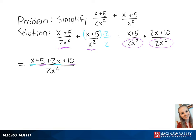When we combine the like terms, this will finally give us 3x plus 15 over 2x squared. This is the final answer.